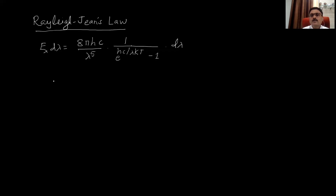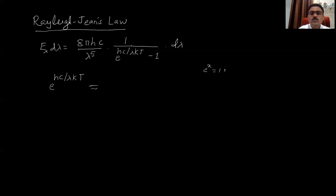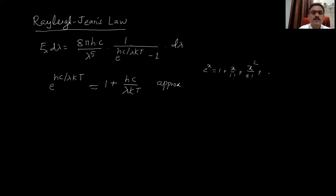For large λ, we consider the term e^(hc/λkT) and expand it using the series e^x = 1 + x/1! + x²/2! + … Considering only the first two terms, this is approximately equal to 1 + hc/(λkT). So e^(hc/λkT) − 1 ≈ hc/(λkT). This is an approximate value valid for large wavelength.